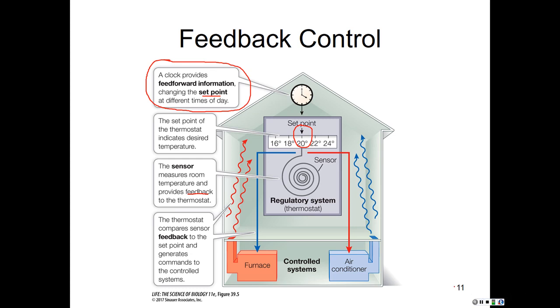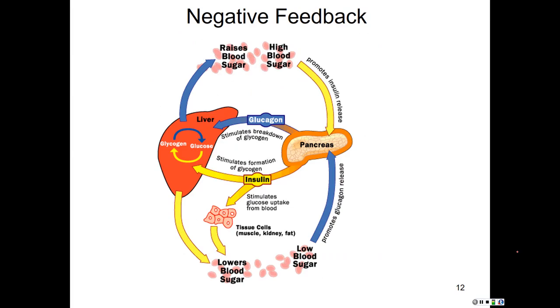Let's talk about negative and positive feedback. In negative feedback, the change in the controlled variable triggers a response to counteract the initial change. In other words, the change elicits a reaction that reduces the effects of that change. Let's use an example.